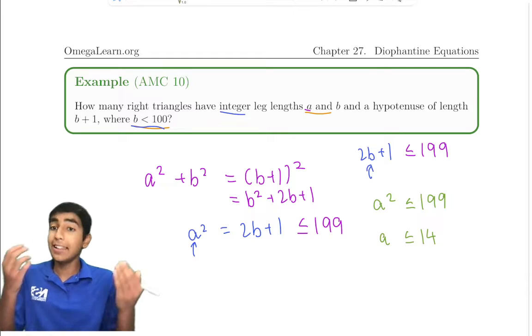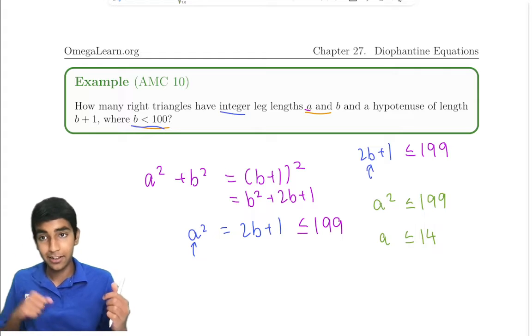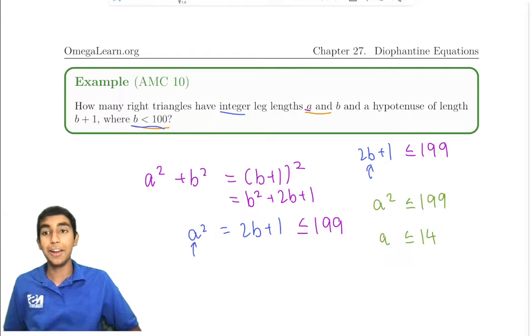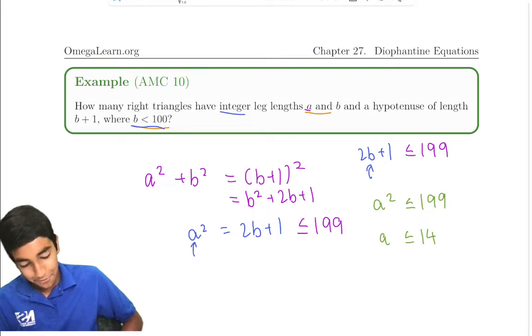14 squared is 196. 15 squared, 225, too big. So a is less than or equal to 14.